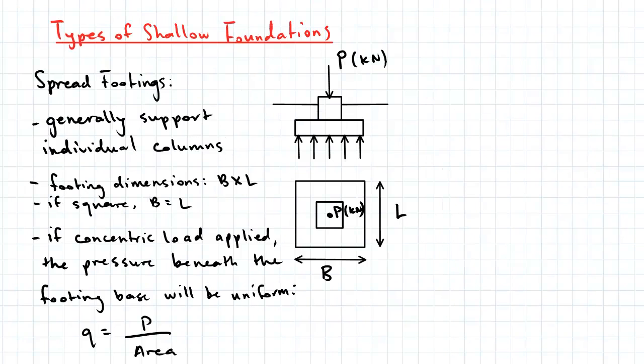So here we have spread footings which generally support individual columns. If the footing is square shaped, the width and length dimensions will be the same. If a concentric load is applied, the pressure beneath the footing base will be uniform. The pressure is found by the compressive load being divided by the area of the footing, q equals P over Area.